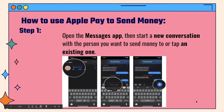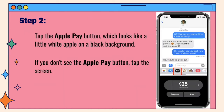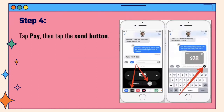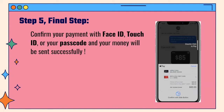How to use Apple Pay to send money. Step one, open the Messages app and start a new conversation with the person you want to send money to, or tap on an existing one. Step two, tap the Apple Pay button, which looks like a little white apple on a black background. If you don't see the Apple Pay button, just tap the screen. Step three, you'll enter the amount of money you want to send. Step four, tap Pay and then the Send button. The final step is to confirm your payment with Face ID, Touch ID, or your passcode, and your money will be sent successfully.